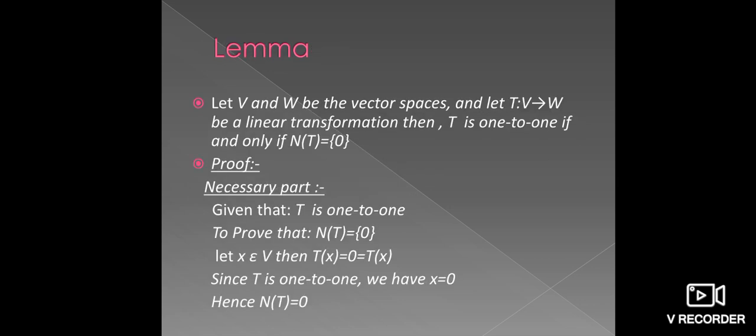Next, see the lemma. Let V and W be vector spaces and T is the Linear Transformation from vector space V into another vector space W. Then T is one-to-one if and only if N(T) equals the singleton set {0}. Given that the mapping T is the Linear Transformation from vector space V into another vector space W, first we have to prove N(T) equals {0}, and then we have to show that the Linear Transformation T is one-to-one. This is an if and only if condition.